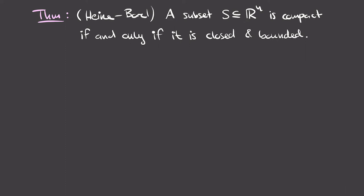The Heine-Borel theorem says that a subset S of R^n is compact if and only if it is closed and bounded. Both conditions are easy to check, giving us a nice description of all compact subsets of R^n. We'll show two directions: compact implies closed and bounded, and closed and bounded implies compact.